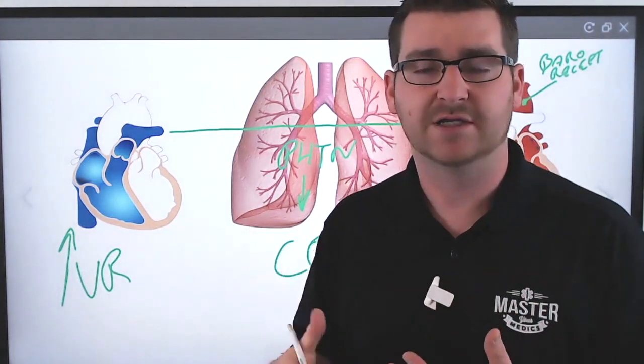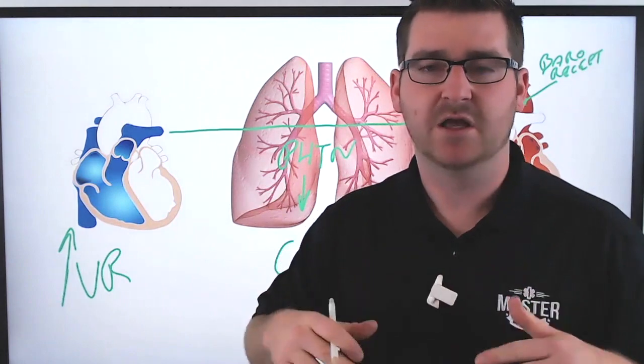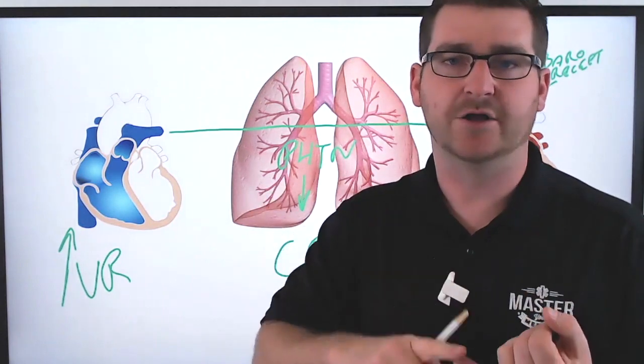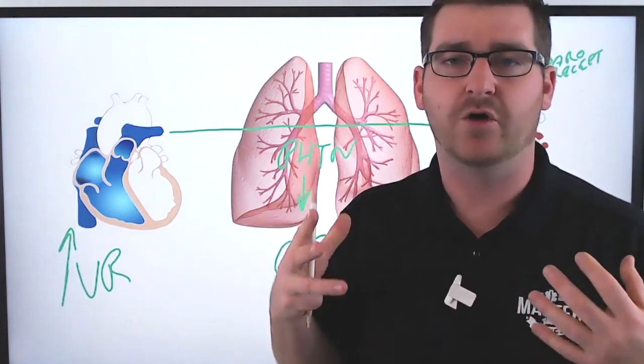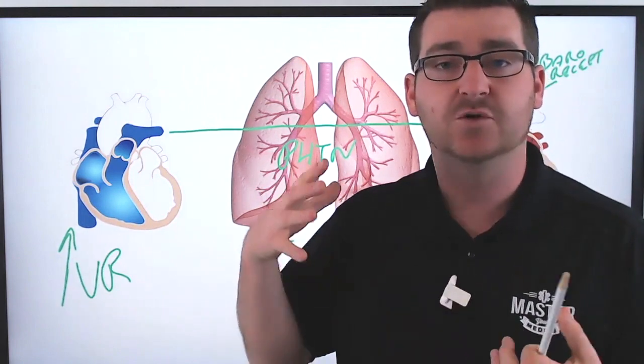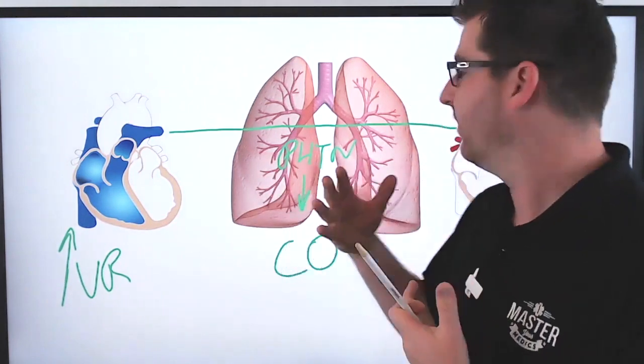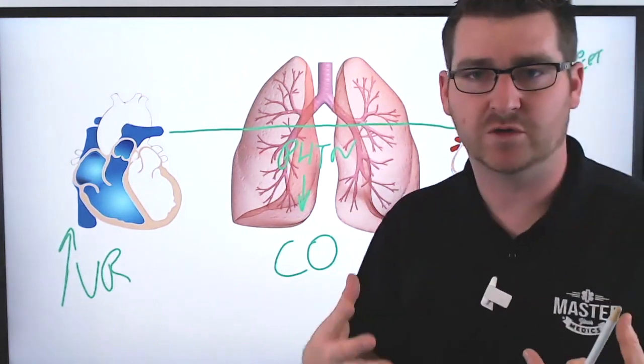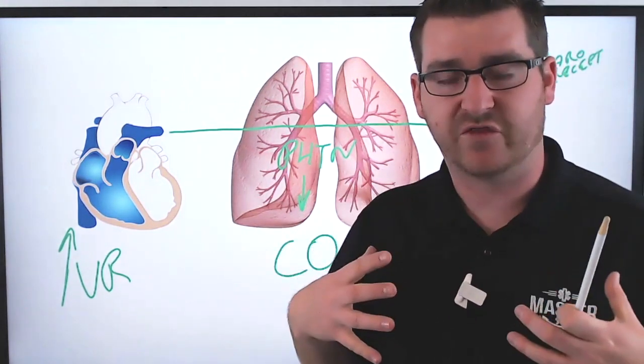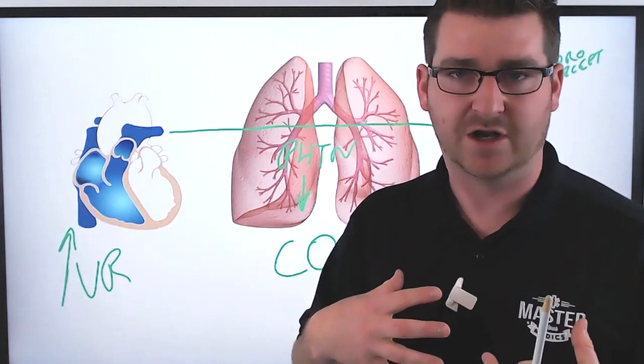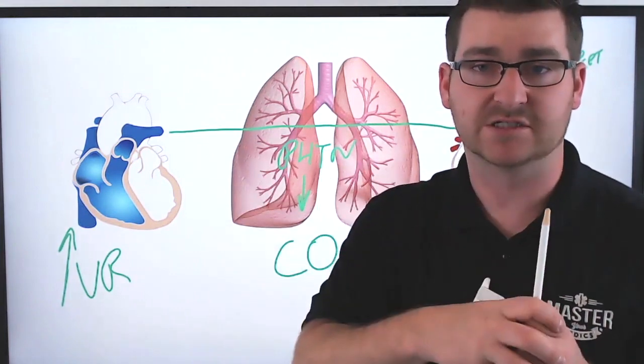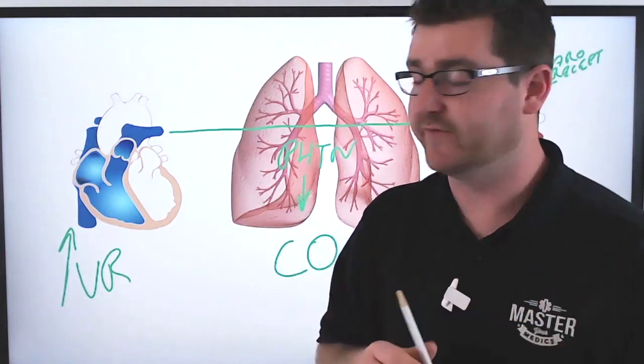They're going to tell the heart, hey, chill out a little bit. It's going to decrease your inotropy, your chronotropy, all the tropes, dromotropy, everything's going to decrease with the activation of those baroreceptors because the aorta thinks that it's got excessive blood pressure, but it's actually being squeezed from the outside, not from the inside. It's kind of interesting.